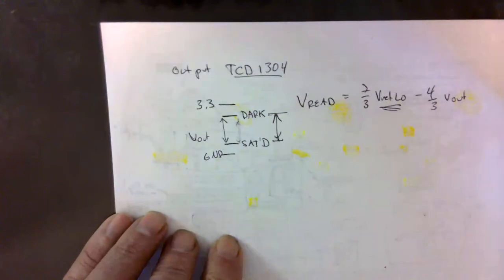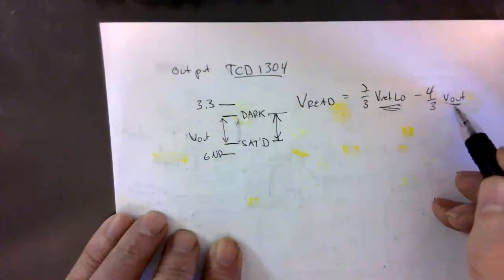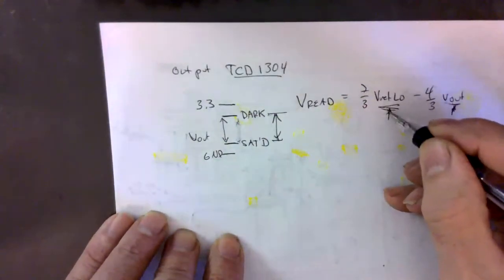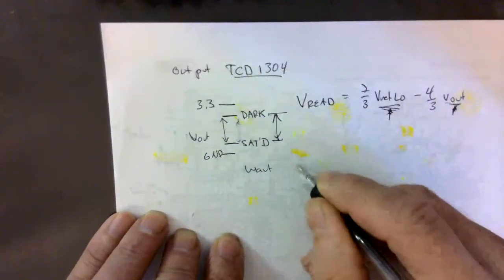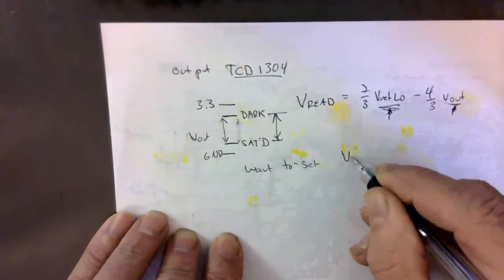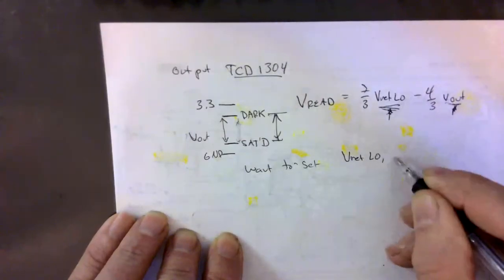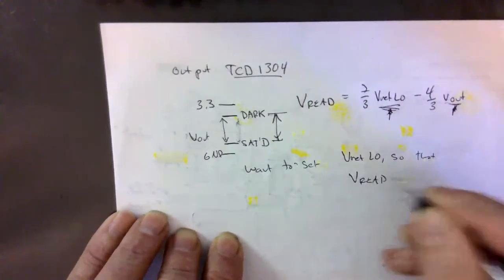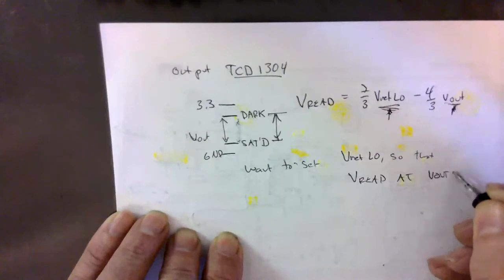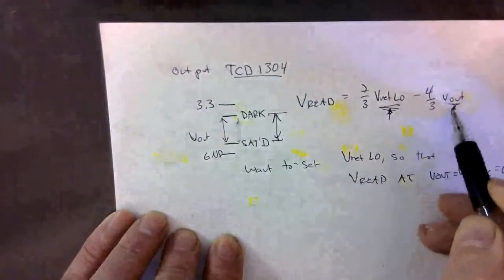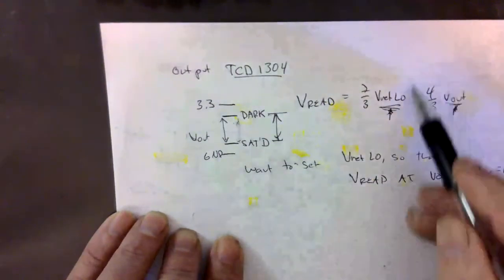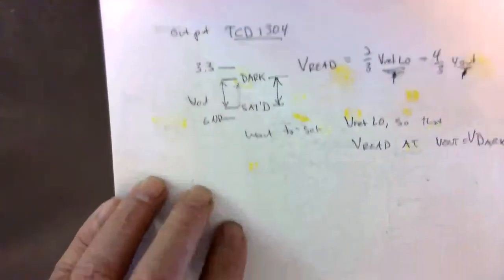Now, what do we want to do? We want to take that and put it in over here and see what we get. Well, what we get depends on this. What we want to do, we want to set V ref low so that the voltage read at V out equals voltage dark is zero. So this thing gets flipped, there's a minus sign on there. So when this thing comes out it's not only going to be amplified but it's going to be inverted.